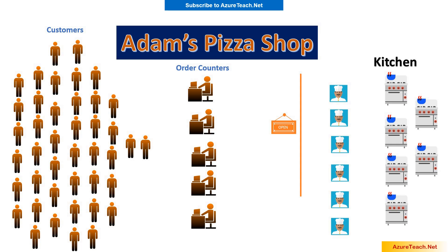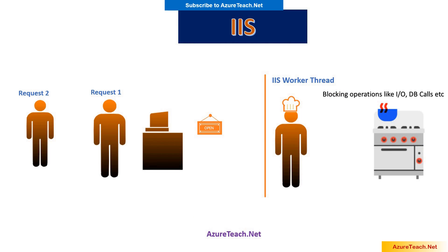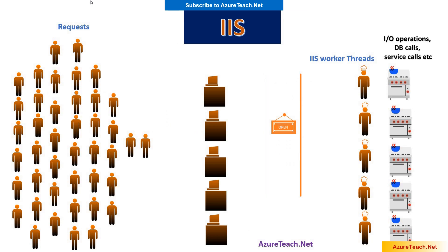Now let us understand the async await concept with the help of this scenario. Imagine Adam's pizza shop as IIS. Here an IIS worker thread is processing request one and it is blocked by some operations like IO operations or DB calls. Meanwhile request two came and this request cannot be served until the IIS worker thread completes its operation and returns back to IIS. Imagine the same scenario in case of multiple requests — all worker threads are processing requests and any new request goes into the queue, and if not processed within some stipulated time, it will get timed out.